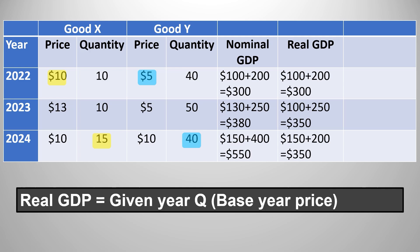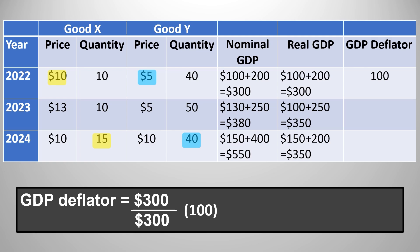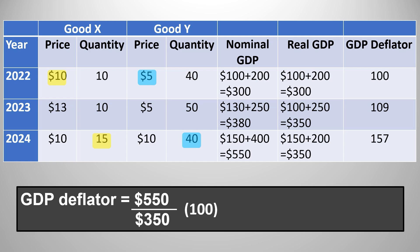There's another thing we can add here now called the GDP deflator. The GDP deflator is a way to calculate inflation. The calculation is really straightforward: nominal GDP divided by real GDP times 100. In 2022, it equals 100 — just like the CPI, this is not a coincidence. In the base year, the GDP deflator will always be 100 because real GDP equals nominal GDP. In 2023, it's 380 divided by 350 times 100, which equals 109. And in 2024, 550 divided by 350 times 100 equals 157. A good thing about using the GDP deflator to measure inflation is that it avoids the substitution bias that the CPI falls victim to. But on the downside, it includes government and investment spending, so it's not a very good reflection of the changes in the cost of living as felt by most people.